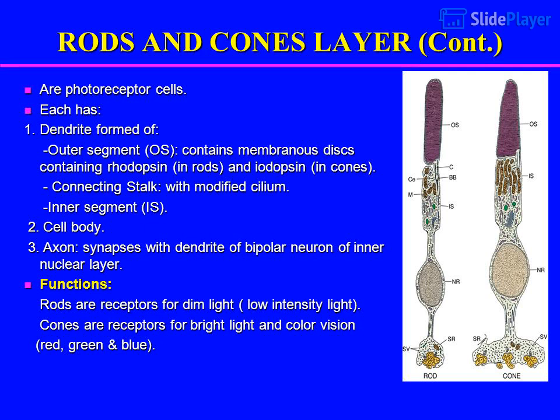Rods and cones layer: these are the photoreceptor cells. Each has: a dendrite forming an outer segment (OS) containing membranous discs with rhodopsin in rods and iodopsin in cones; a connecting stalk with a modified cilium; an inner segment; a cell body; and an axon that synapses with the dendrite of a bipolar neuron of the inner nuclear layer.